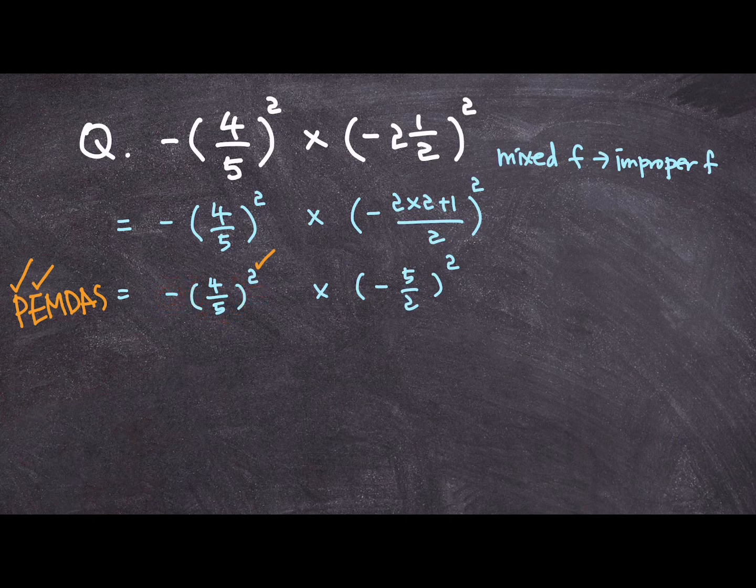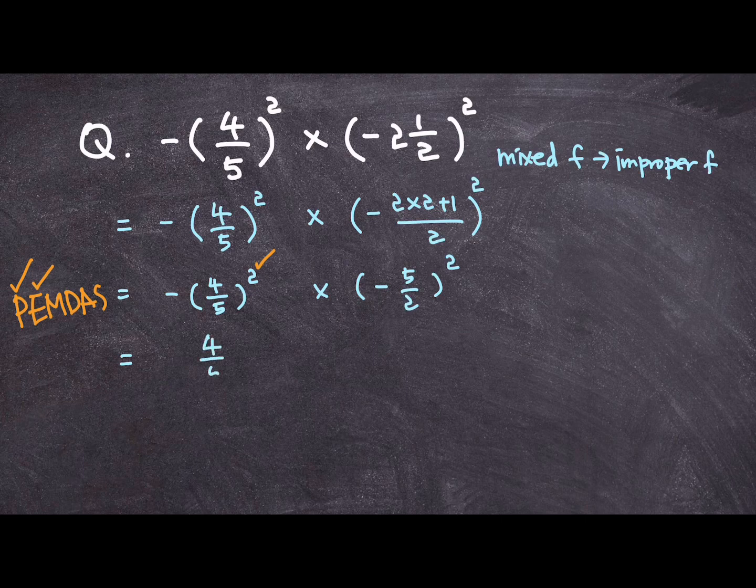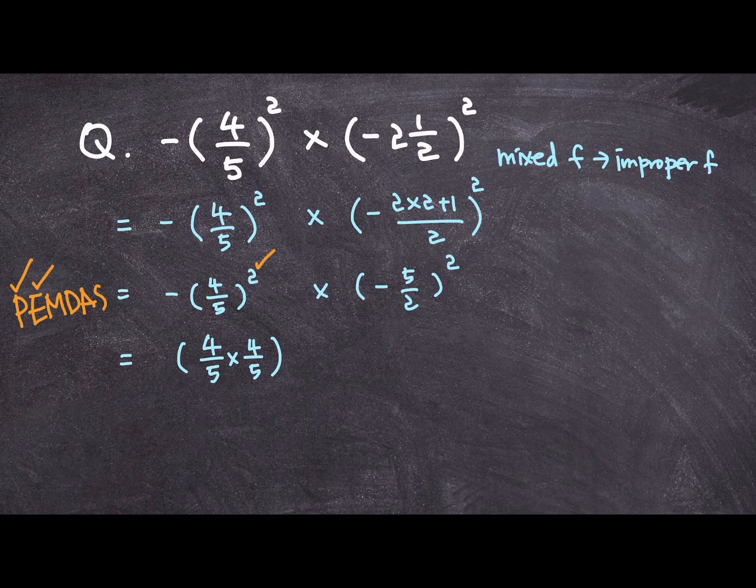So, if I do that, what do I get? 4 over 5 times 4 over 5, and then add negative sign. That's the first fraction done.